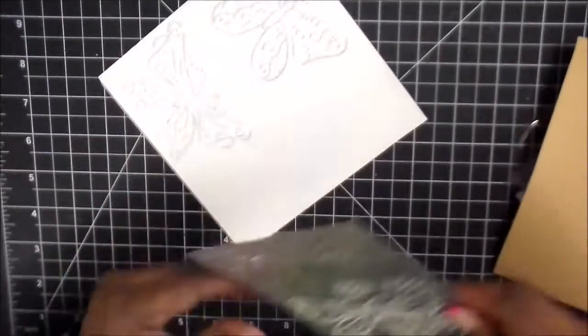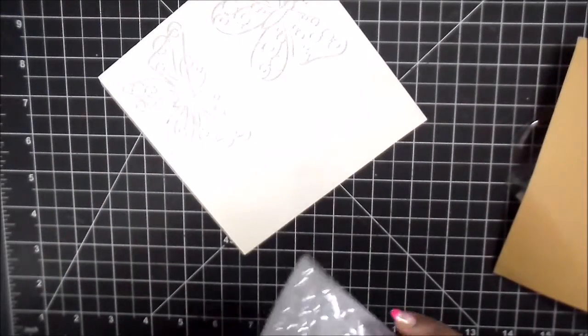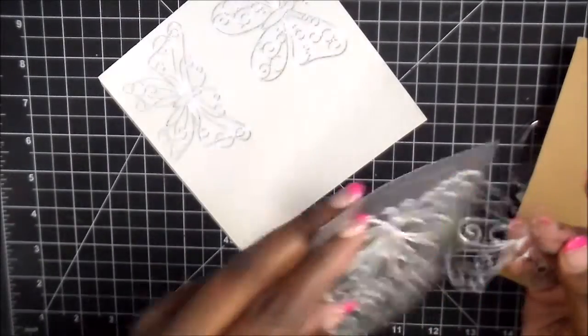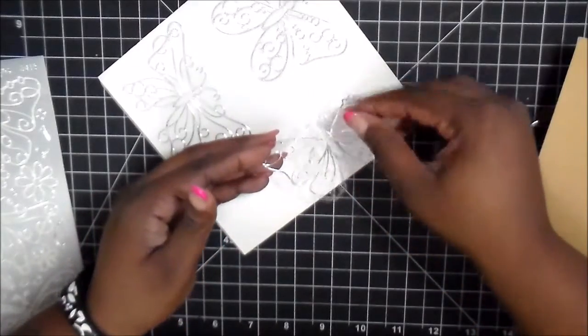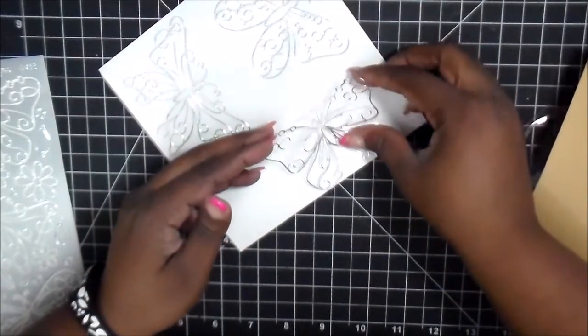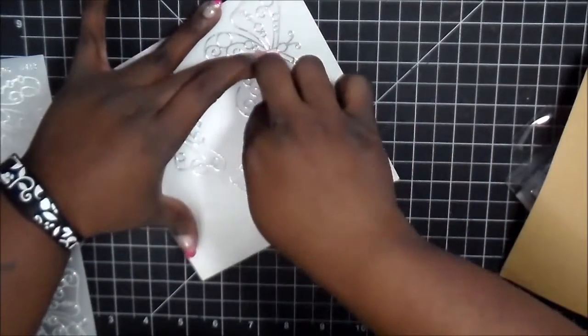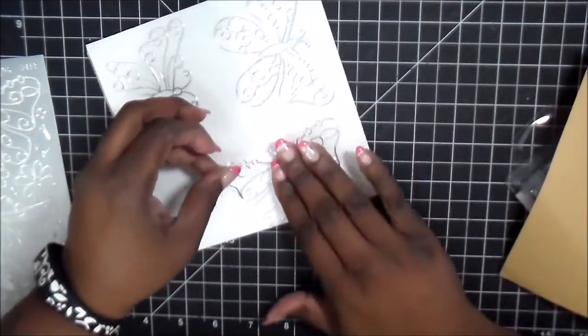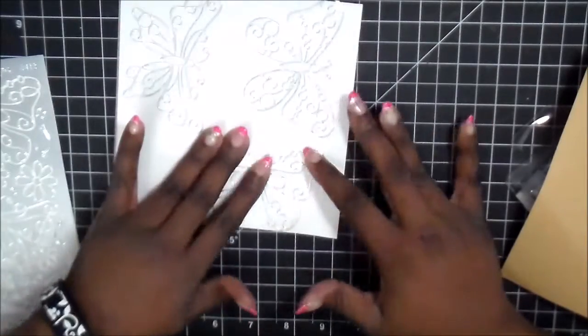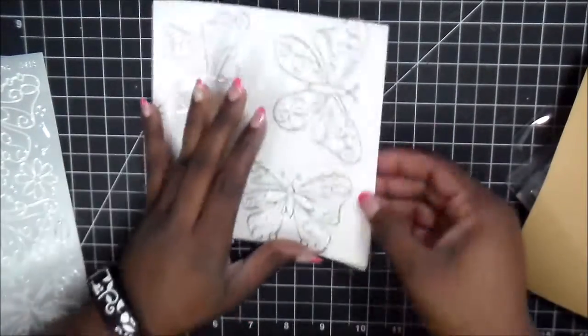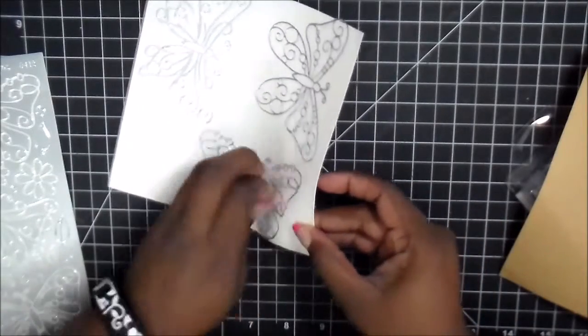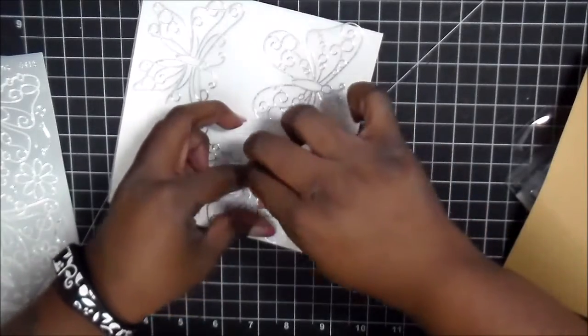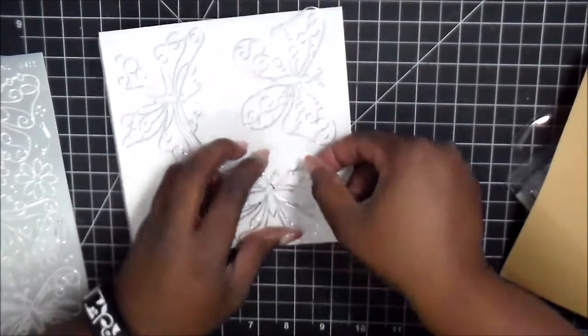Now once I get all my pieces onto my double-sided tape, I will fussy cut all the pieces out. So I'm going to have the three butterflies, and then I'm also going to have four leaves that I'm going to cut out. And I just do that because it's easier, and I don't wind up wasting any of my powder or beads or whatever it is that I'm using, because I want to make sure that it's only sticking where I want it.